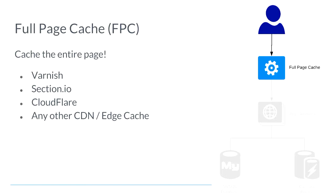The really nice thing about Varnish is it's fast. If you try and benchmark a Varnish server serving only cache hits, it's really hard to get meaningful data. Cache hits come back in single digit milliseconds — it will serve them as fast as your network will allow. It's an enormous difference compared to potentially several hundred milliseconds for a full page render through Magento.